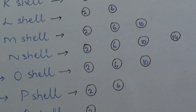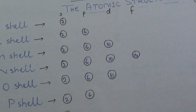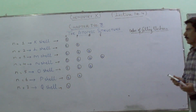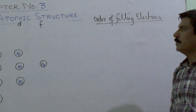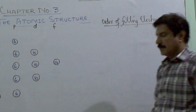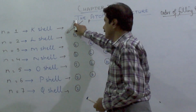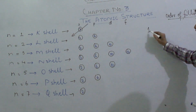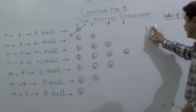Now, if I write the order of filling electrons by following the Aufbau principle — the Aufbau principle represents the ground state configuration for elements. The first two electrons will be allowed to enter in the S orbital of the first shell, so we write 1S2. Here, the number indicates the shell, S is the subshell, and 2 is the number of electrons entering the S orbital.